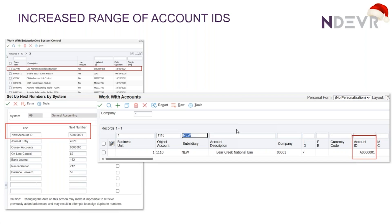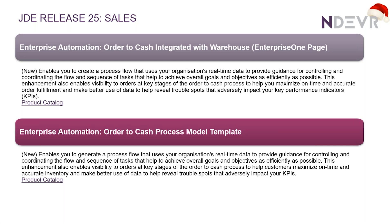In the sales area, Oracle have delivered some enterprise automation options. This is of course where a lot of their focus is these days, and they've delivered two options here. The first is a process page for order to cash integrated with warehouse — it's an E1 page — and the next is a process model template. I'll talk a little bit more about that in just a sec.